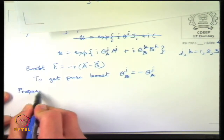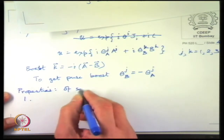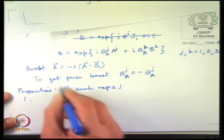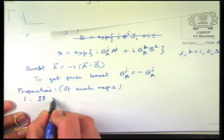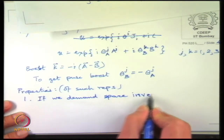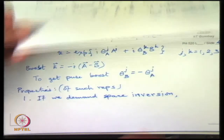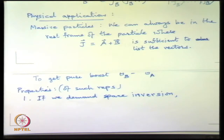Two important properties of such representations. One is that we want space inversion to be part of our symmetries. Under space inversion J goes to itself — J is a pseudo-vector, like an x-y rotation: if you flip the sign of both x and y, it does not change. So x going to minus x means J goes to J.